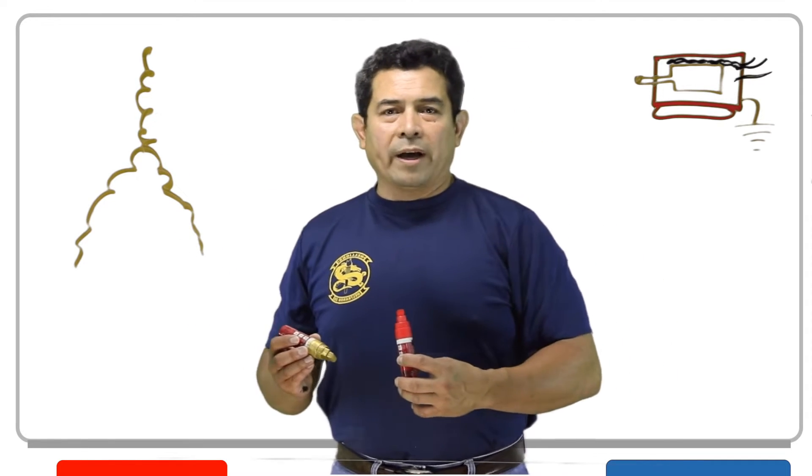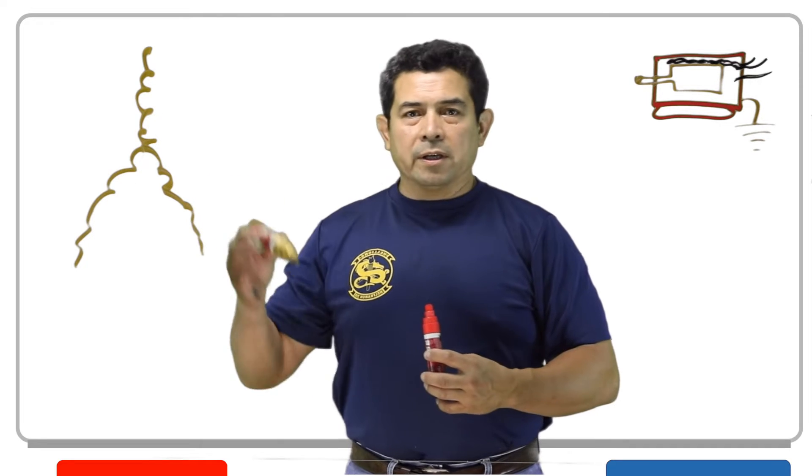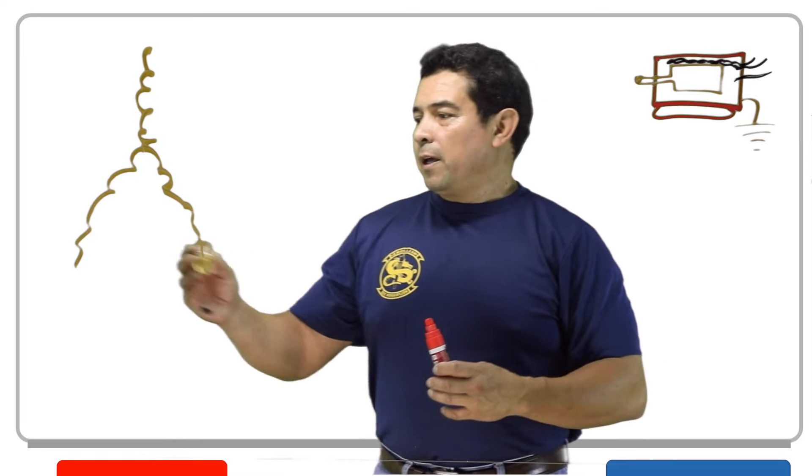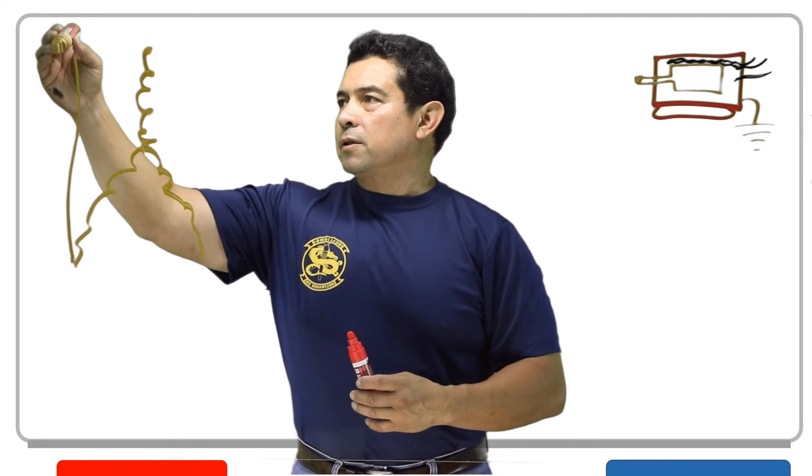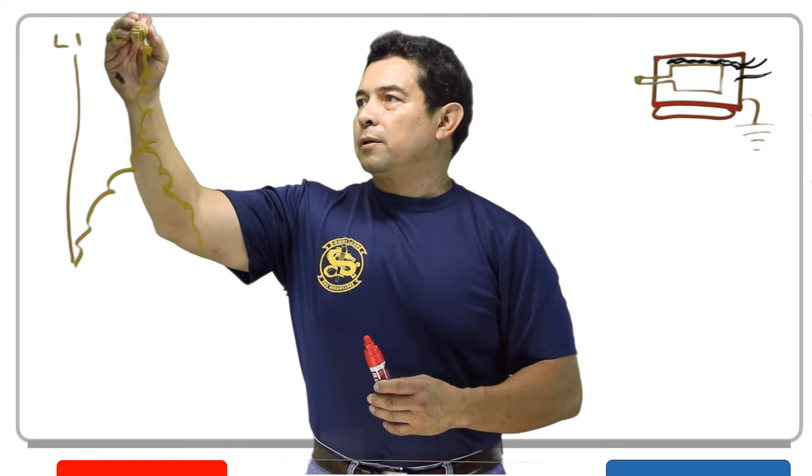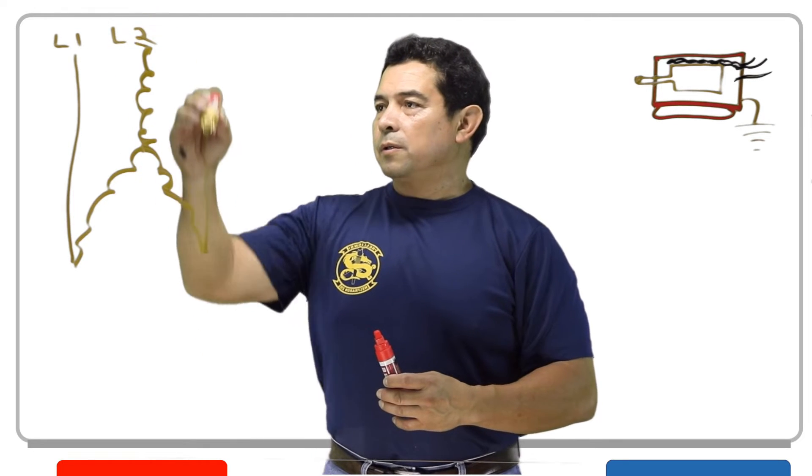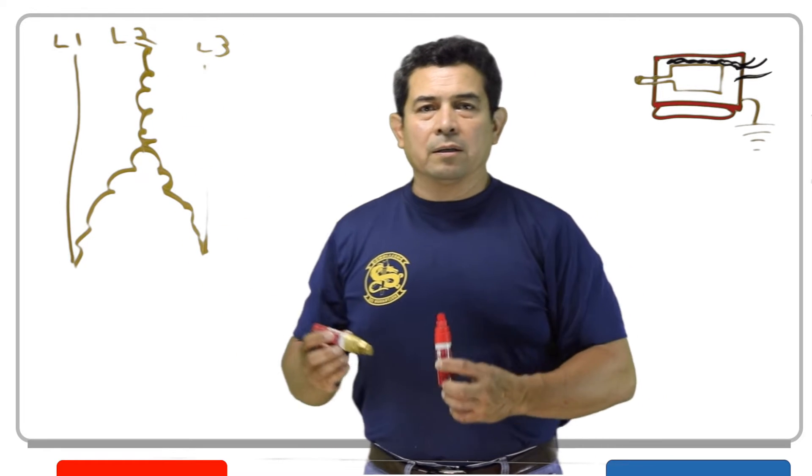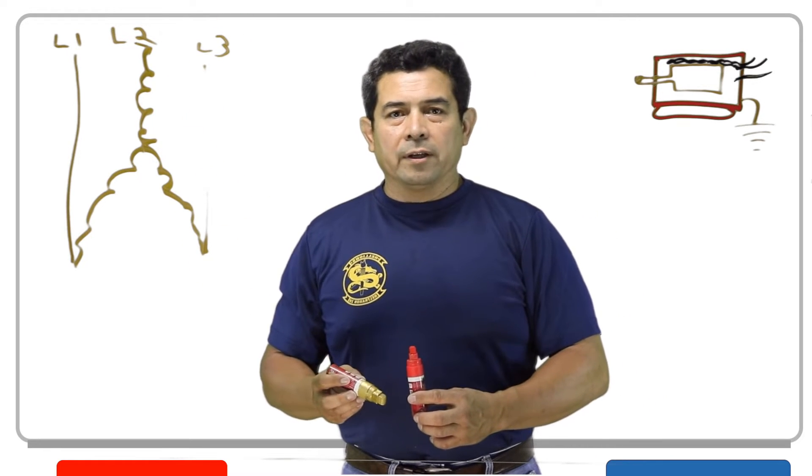we are going to be using three windings like this. And usually, they're going to be in what they call a Y configuration. If you notice, it's kind of upside down Y, but that's a Y configuration. And we can take this one, and we can hook this up to L1, hook this one up to L2, and then this one up to L3. That's basically what we're going to have in the motor.